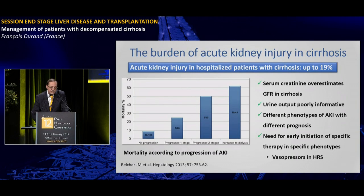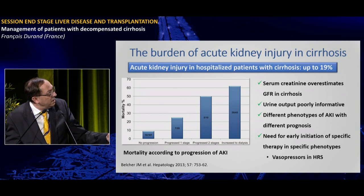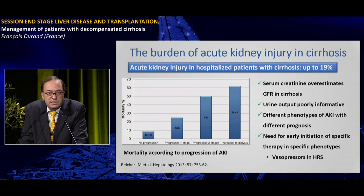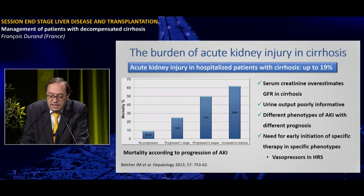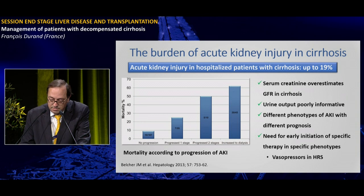Acute kidney injury is common in cirrhosis and is another cause of mortality. The incidence of AKI can be up to 19-20% in hospitalized patients with cirrhosis, and progression of AKI is associated with higher mortality. There are difficulties in diagnosing AKI in cirrhosis because serum creatinine overestimates GFR, and urine output is poorly informative in patients with refractory ascites who are frequently oliguric.